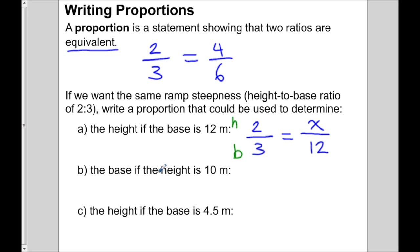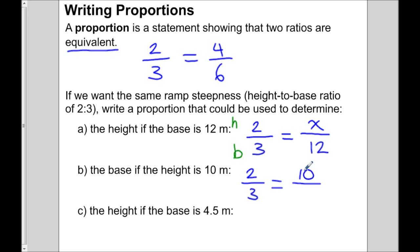Let's write another proportion — to determine the base if the height is 10 meters. We start with the known ratio two to three and make it equal to a second ratio. The height is 10, so the top number represents height — I put 10 in the numerator. I don't know what the base is, so that goes on the bottom as the unknown. This is the proportion we could use.